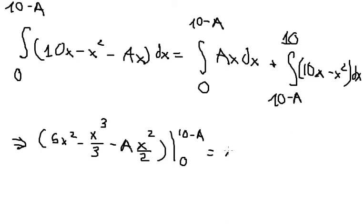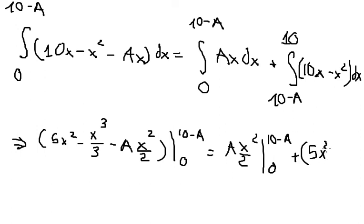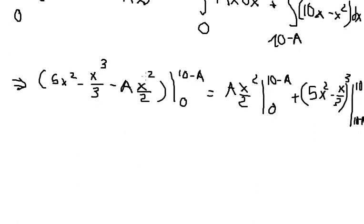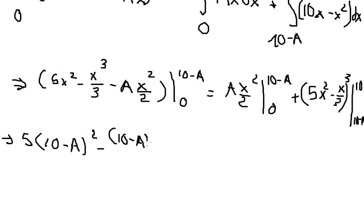For the second integral, the antiderivative of Ax is Ax squared over 2, evaluated from 0 to 10 minus A. Then we have 5x squared minus x cubed over 3, evaluated from 10 minus A to 10.